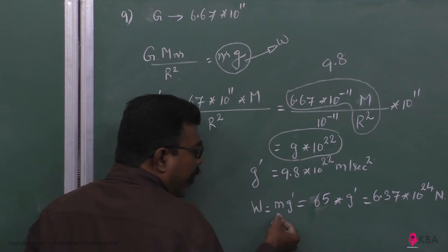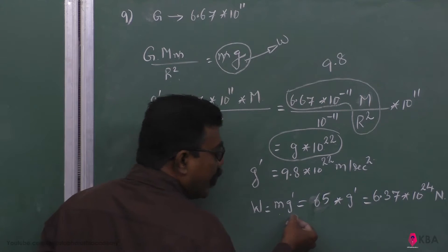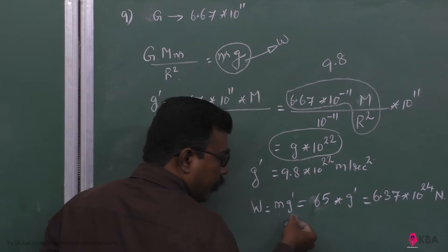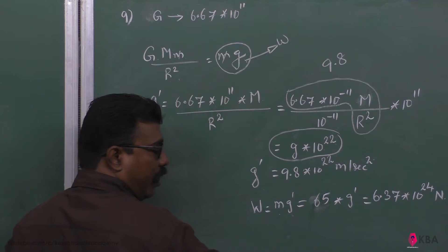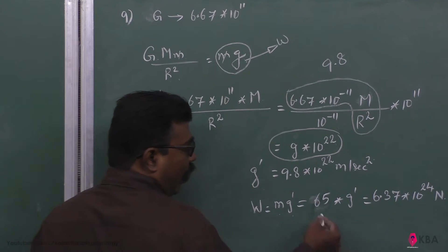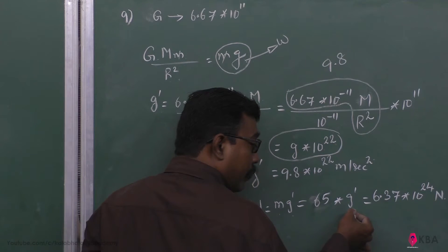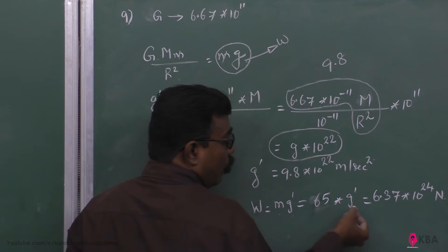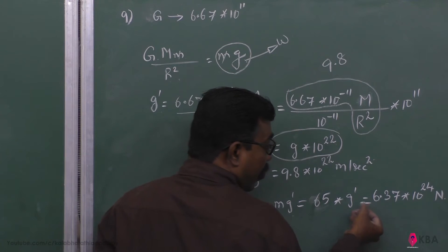Weight is equal to m into g. Now it becomes m into g dash, so it is equal to 65 into g dash, which is 65 into G into 10 to the power of minus 11 Newtons.